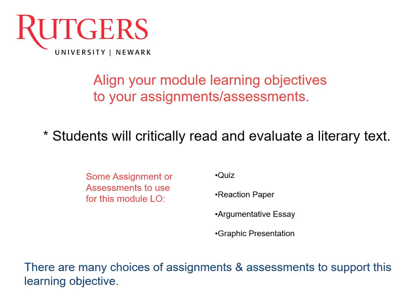So how do we do that? If we take one of the module learning objectives — students will critically read and evaluate a literary text — how do we get the student to demonstrate that? There are many different ways: you can have the student take a quiz, maybe a self-assessment type of quiz; they can write a reaction paper, or a more formal in-depth argumentative essay; perhaps even present a graphic type of presentation to the course. There are many different ways to get the student to demonstrate and practice the module learning objective.